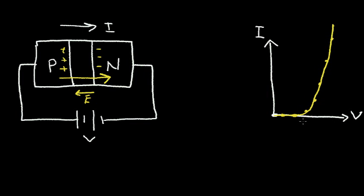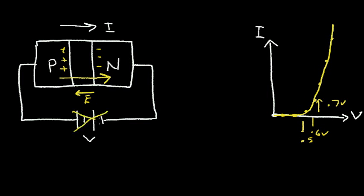This voltage where it starts conducting, depending on the diode characteristics, could be around 0.5 volts — perhaps 0.6 volts, and out here perhaps 0.7 volts. Now, let's analyze what happens if I reverse the polarity of this battery. I'm going to remove this battery and connect one with the opposite polarity.